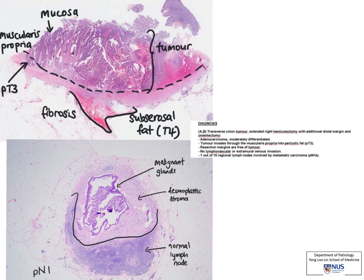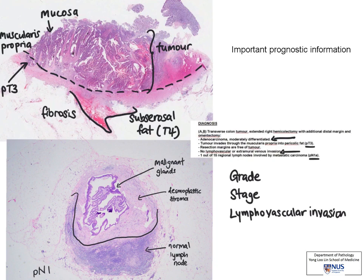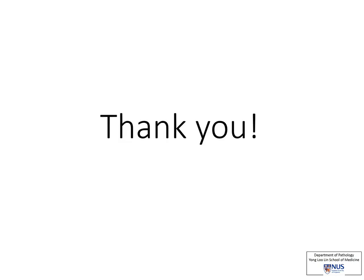After looking at all the slices and lymph nodes, we are ready to make the final diagnosis of adenocarcinoma. As pathologists, we also provide other important prognostic information, such as stage and grade, which corresponds to the degree of glandular differentiation. We also provide staging information — in this case the depth of invasion and nodal metastases — as well as the presence of lymphovascular invasion on histology as a prognostic factor. Last but not least, the assessment of surgical margins to confirm the patient does not need to undergo surgery again. Thank you for your attention, and we hope you gain some insights on the role of a pathologist in patient care.